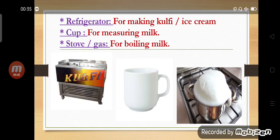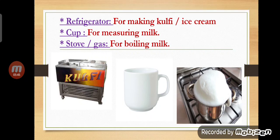The next object is a refrigerator. A refrigerator is used for making kulfi or ice cream, which you especially enjoy in summer time. The next object is a cup. A cup is used for measuring milk or to keep milk. The last object is a stove or gas. We use a stove or gas for boiling milk or to make kheer, etc.